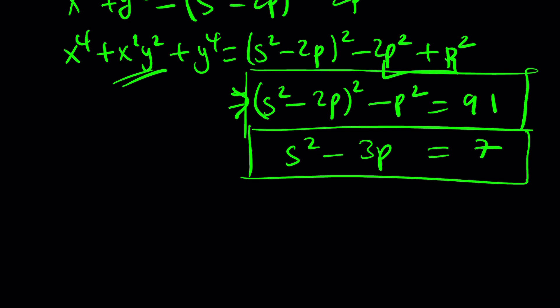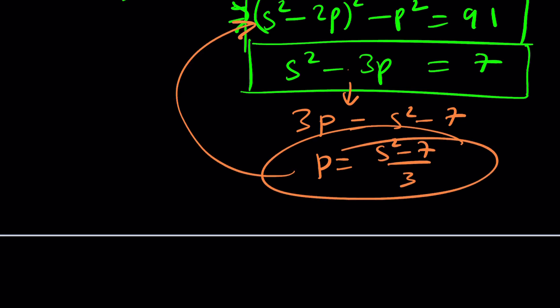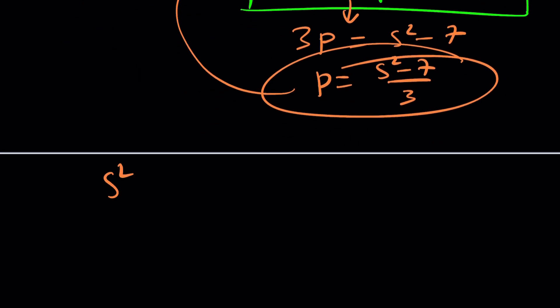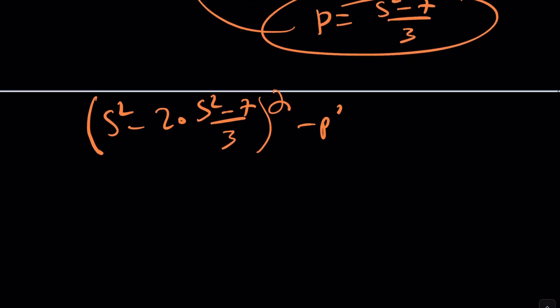Anyways, so how do you solve the system? Well, the easiest way to me in this case would be to isolate p from here. And we can do that by adding 3p and then subtracting 7. So in other words, 3p would turn into s squared minus 7. So p would be s squared minus 7 divided by 3. So that's something I can use in the other equation so that we can get a single variable. So s squared is going to stay the same. Minus 2p, we're going to replace p with that. And then s squared minus 2p, but that needs to be squared, of course. And then we have to subtract p squared from it. And that'll be 91.